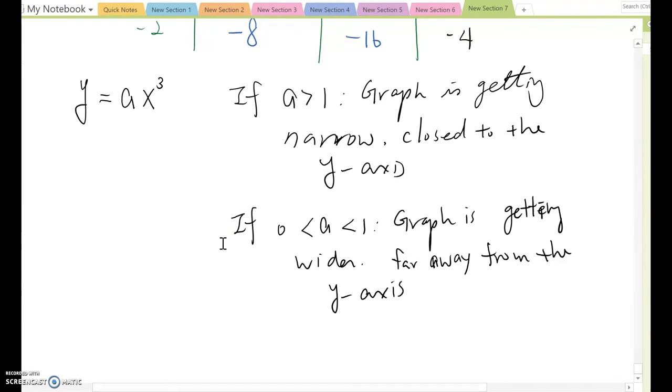If a is bigger than 1, then graph is getting narrower and close to the y-axis. And between zero and 1, then it's getting wider and far away from the y-axis.